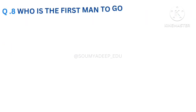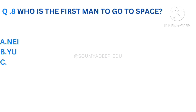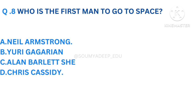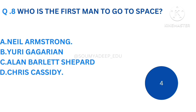Who is the first man to go to space? The options are Neil Armstrong, Yuri Gagarin, Alan Barlet Shepard, Chris Cassidy. Your time starts now. The answer is Yuri Gagarin. Let's move to the next question.